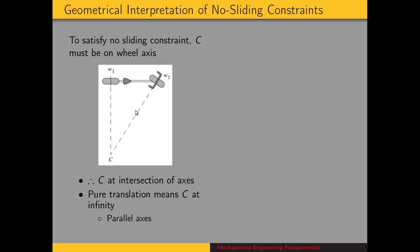If we have multiple wheels, then the point where their axes intersect is the location of the instant center. In the case where there's no angular velocity — pure translation — that just means C is at infinity. So if the axes are parallel, they intersect at infinity and omega is zero.